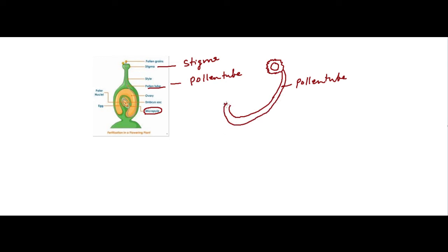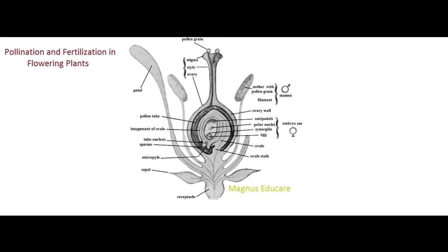The pollen tube reaches and opens inside the ovule through an opening known as the micropyle. Inside the ovule is the embryo sac. The embryo sac contains egg nuclei near the micropyle, two polar nuclei in the middle, and antipodal cells. This whole structure is the ovule.